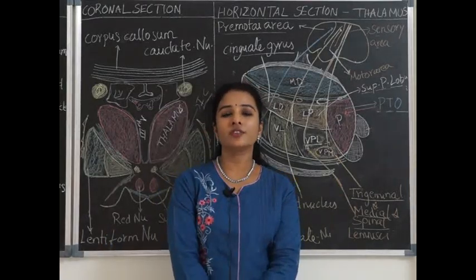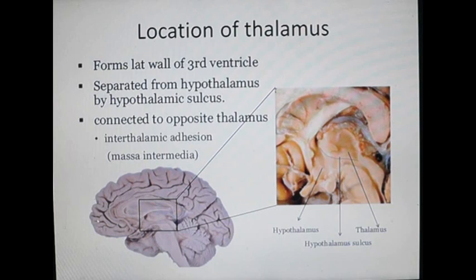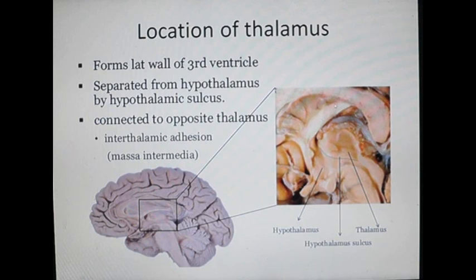That covers in short the connections of the thalamus. Now we shall look at some spotters. In the mid-sagittal section of the brain we can see the location of the thalamus. In a closer view, the thalamus and hypothalamus are separated by the hypothalamic sulcus; the upper end opens into the interventricular foramen of Monro and the lower end continues as the cerebral aqueduct in the midbrain. Superiorly the thalamus is related to the pia mater and choroid plexus called the tela choroidea of the third ventricle.